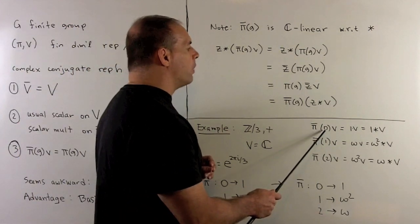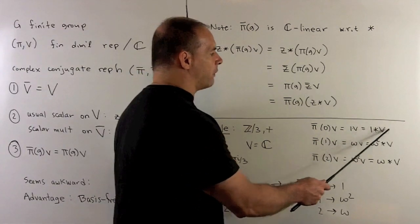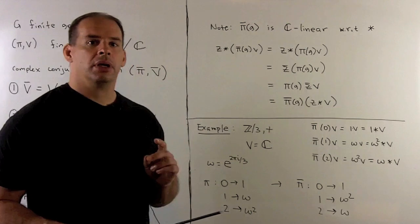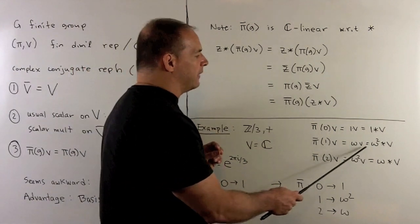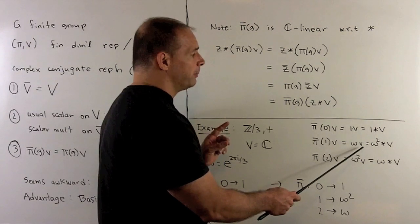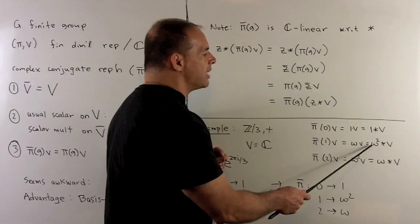Well, pi bar of 0 on V, it just goes to 1V, which is going to go to 1 star V. For pi bar of 1 on V, that goes to omega V with the usual action. But, to write it with the new scalar multiplication, I pull that out as omega squared.